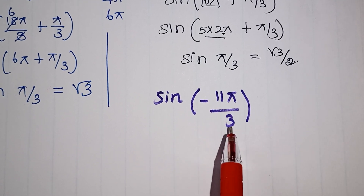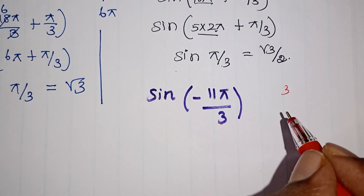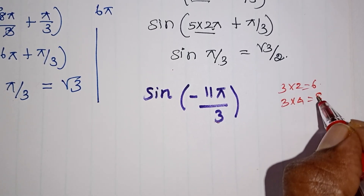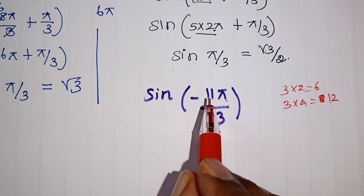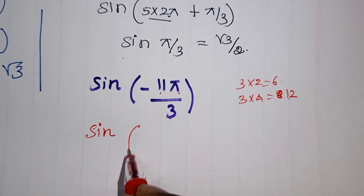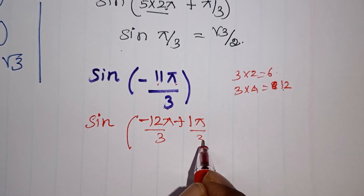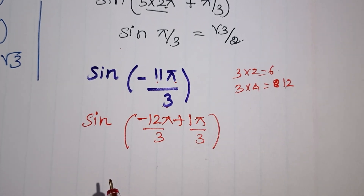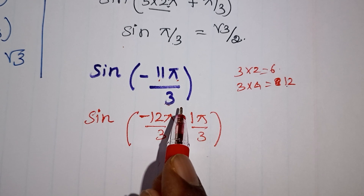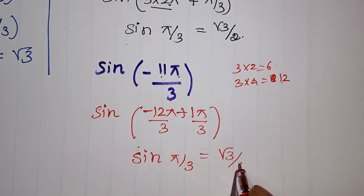Now this is negative: minus 11 pi by 3. The denominator is 3. Even multiples of 3 near 11 — we need to add a complete angle. We add 12 pi by 3 which is 4 pi. So minus 11 pi by 3 plus 12 pi by 3 equals pi by 3. The 4 pi is a complete angle, so the remaining value is sin of pi by 3. Pi by 3 is 60 degrees. Sin 60 is root 3 by 2. So the answer is root 3 by 2.